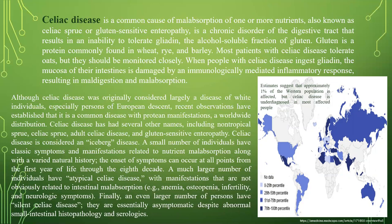The onset of symptoms can occur at all points from the first year of life through the eighth decade. A much larger number of individuals have atypical celiac disease with manifestations not obviously related to intestinal absorption, such as anemia, osteopenia, infertility, and neurological symptoms. Finally, an even larger number of persons have silent celiac disease — they are essentially asymptomatic despite abnormal small intestinal histopathological and serological presentation.